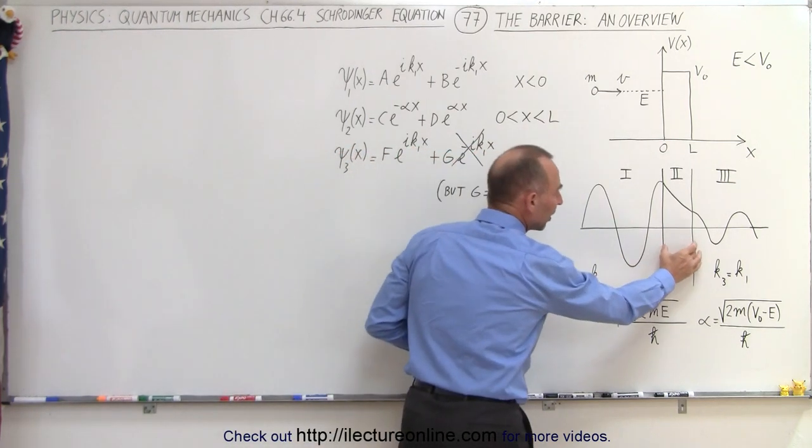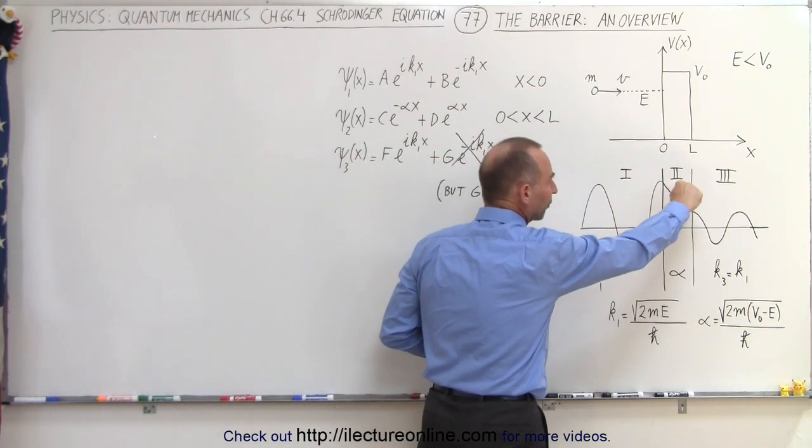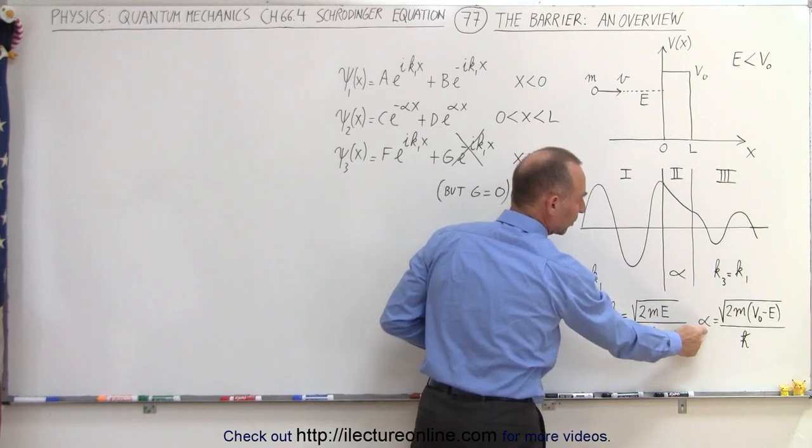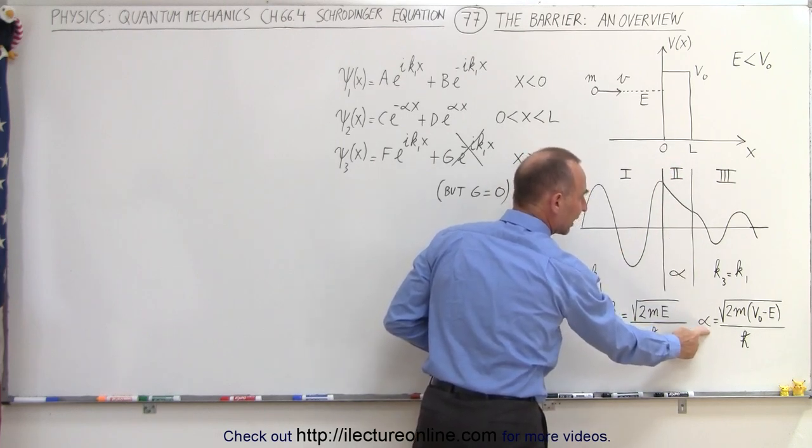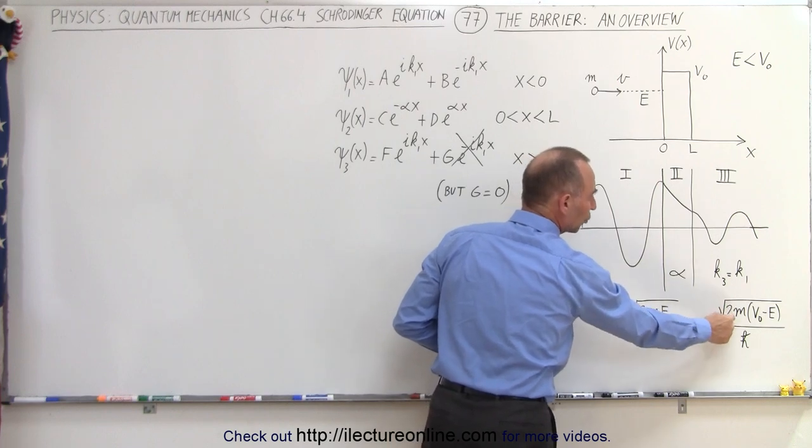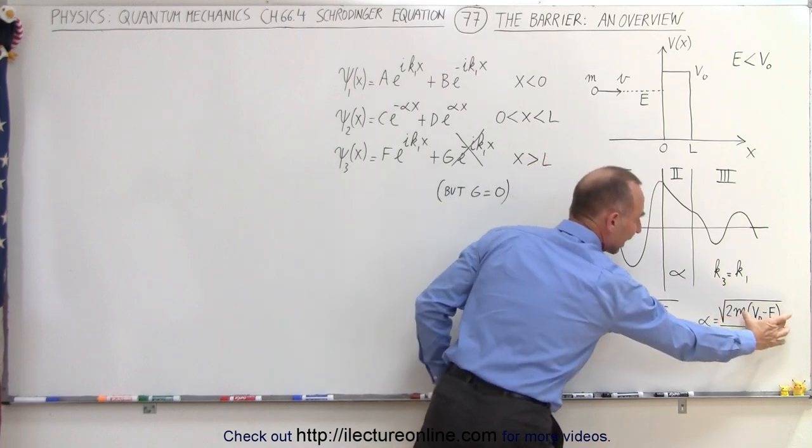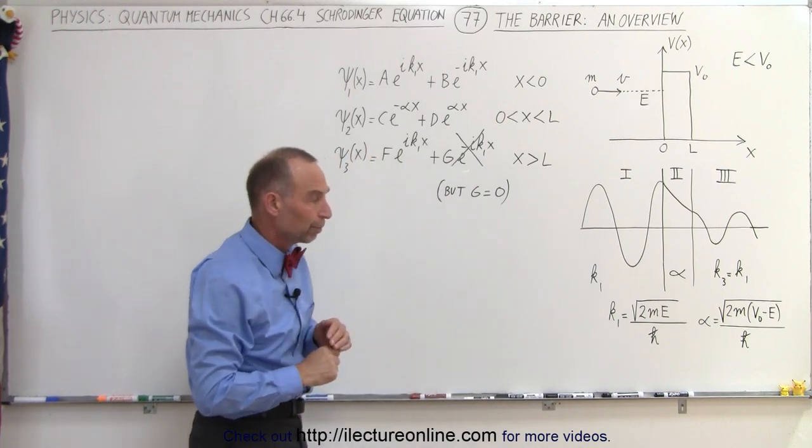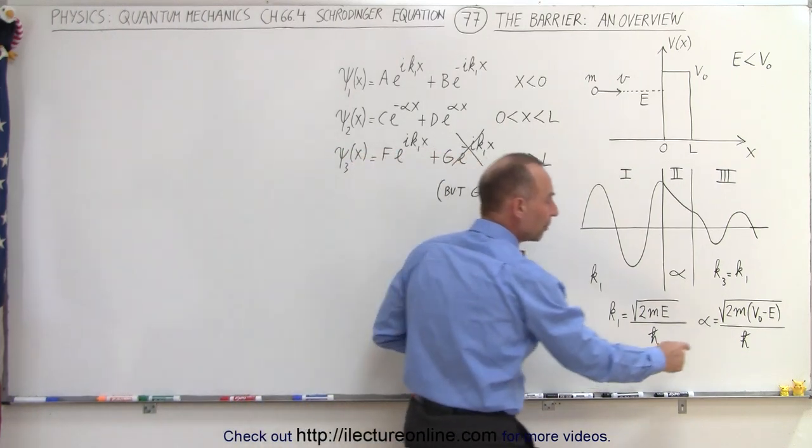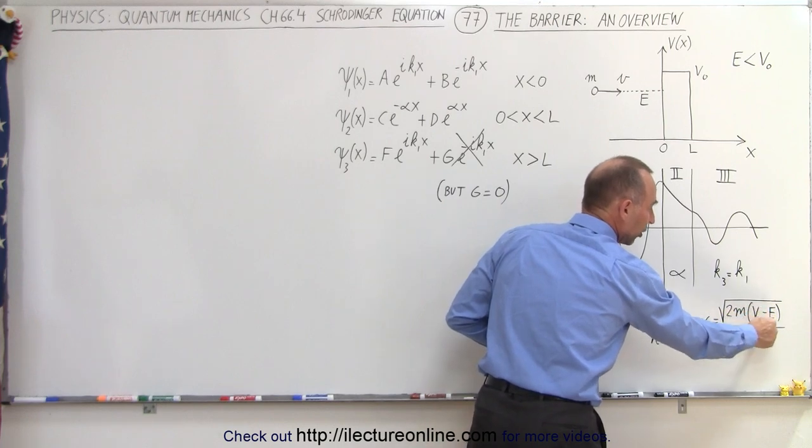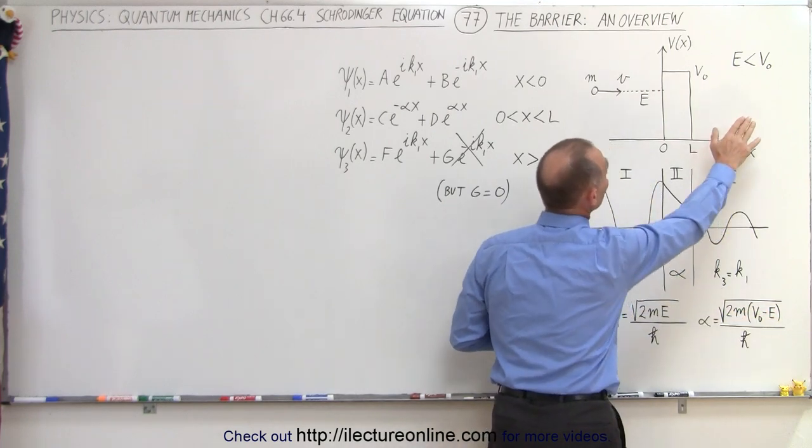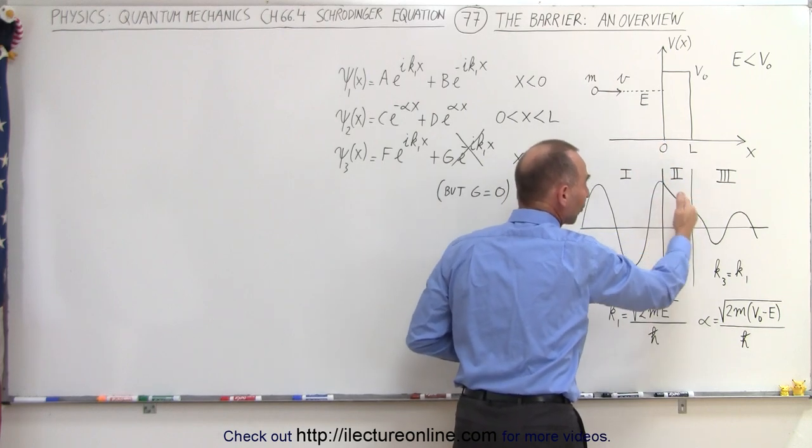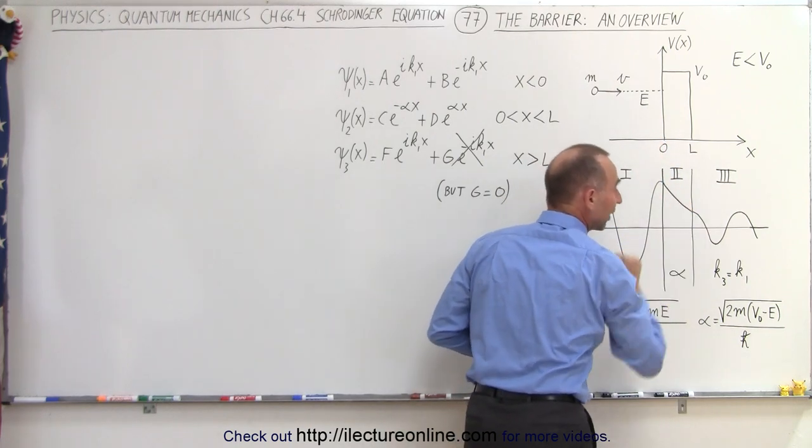In the barrier itself, notice we no longer have an oscillatory function. We have actually an exponential decay function, and that exponential decay coefficient is indicated by alpha, which is the square root of 2 times the mass of the particle times the difference in the energy of the barrier versus the energy of the particle. We always write the energy of the barrier first, knowing that this is larger than e, and so that's what we have indicated right here. So it will be an exponential decay function going from the left side of the barrier to the right side of the barrier.